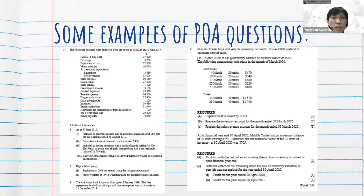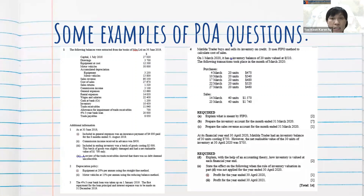These two questions are examples of POA questions in Paper 2. As you can see, the questions are longer and have many question parts. Students are expected to analyse the information given to answer the question parts.